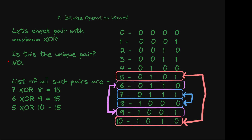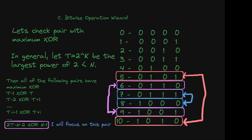Is this the unique pair? The answer is no. Let's list all such pairs: 7 and 8 have maximum XOR, 6 and 9 also have maximum XOR, and 5 and 10 also has maximum XOR — all three pairs have maximum XOR for n=11. In general, if t equals 2 to the power k is the largest power of 2 less than n, then all pairs of the form (t-1, t), (t-2, t+1), ..., (t-i-1, t+i) have maximum XOR. There would be n minus t such pairs.